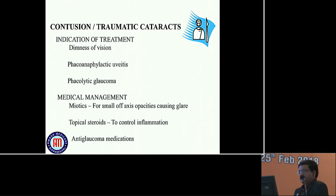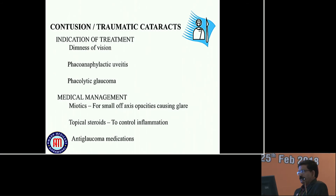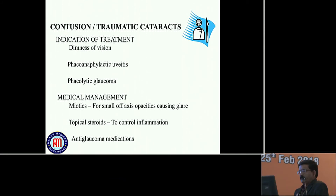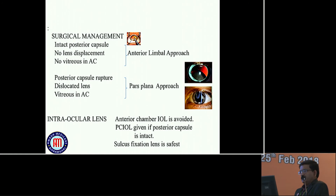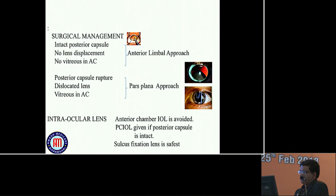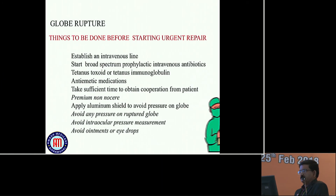For lens trauma, indications for treatment are dimness of vision, phacoanaphylactic uveitis, and phacolytic glaucoma. Medical management: miotics for small or off-axis opacity causing glare, topical steroids to control inflammation, anti-glaucoma medications. Surgical management: if intact posterior capsule, no lens displacement, and no vitreous in AC, then anterior limbal approach. If posterior capsule is ruptured, dislocated lens, or vitreous in AC, then pars plana approach. Anterior chamber IOL is avoided these days; PCIOL is given if posterior capsule is intact; sulcus fixation lens is the safest in those cases.